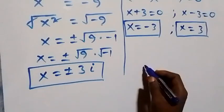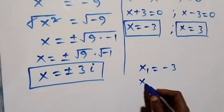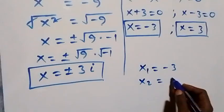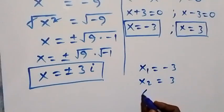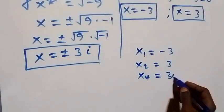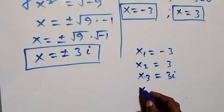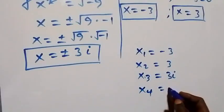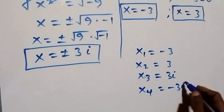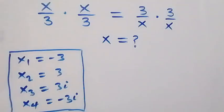That is: x₁ equals minus three, x₂ equals three, x₃ equals three i, and x₄ equals minus three i. So altogether we have two real solutions and two complex solutions. Now we can check to confirm if the solutions satisfy the given problem.